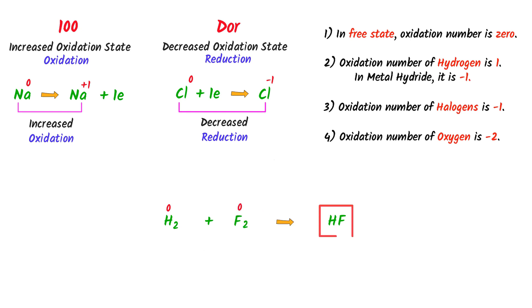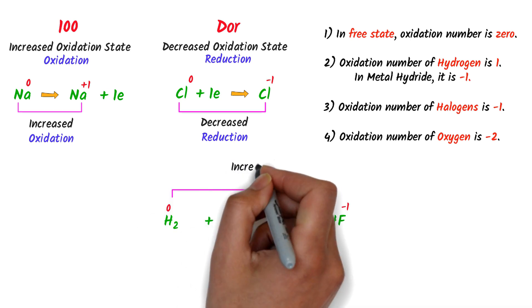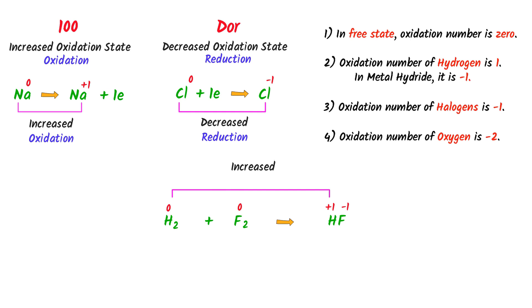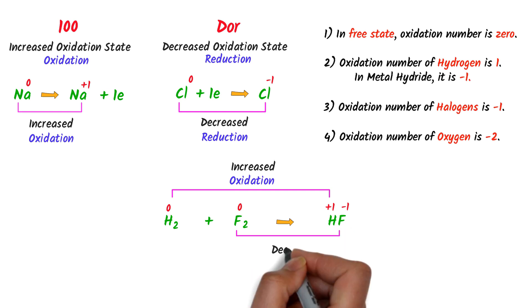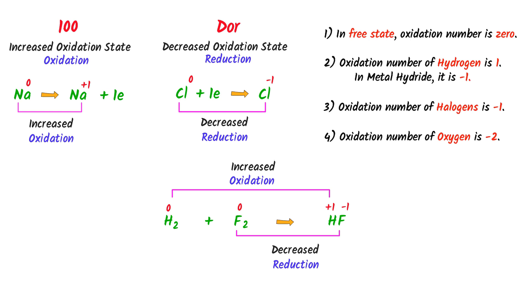Here, hydrogen and fluorine are in the combined state. We know that in the combined state, the oxidation state of fluorine is negative one. Since hydrogen fluoride is a neutral molecule, the oxidation state of hydrogen is positive one. We can see that the oxidation state of hydrogen increases from zero to positive one, so it is oxidized. The oxidation state of fluorine decreases from zero to negative one, so it is reduced. Therefore, oxidation and reduction take place in this reaction — thus, it is a redox reaction.